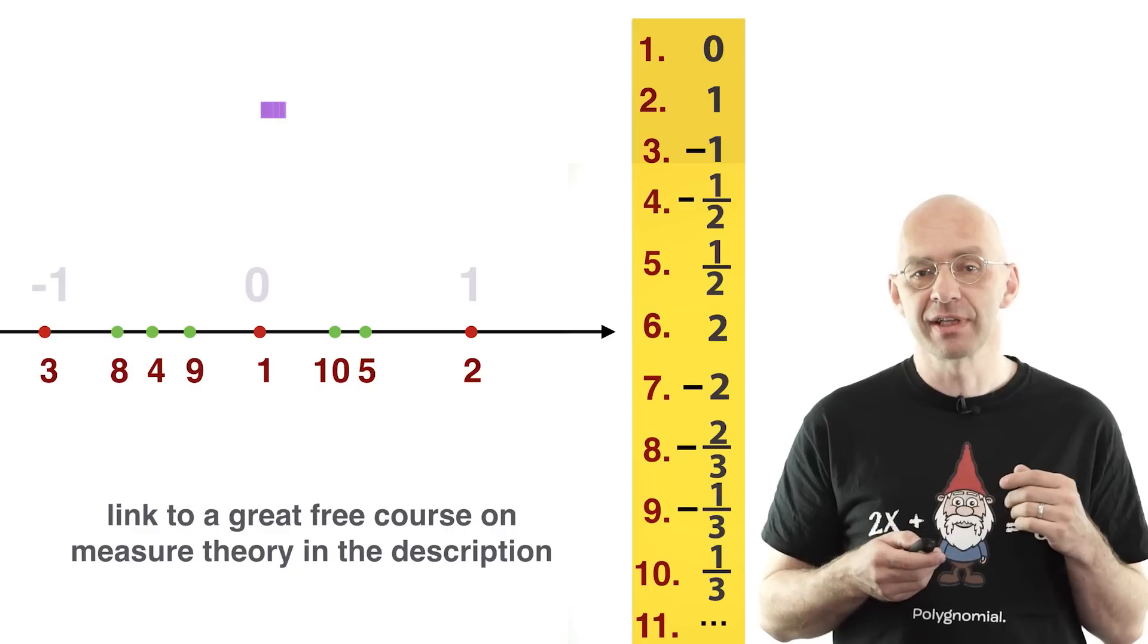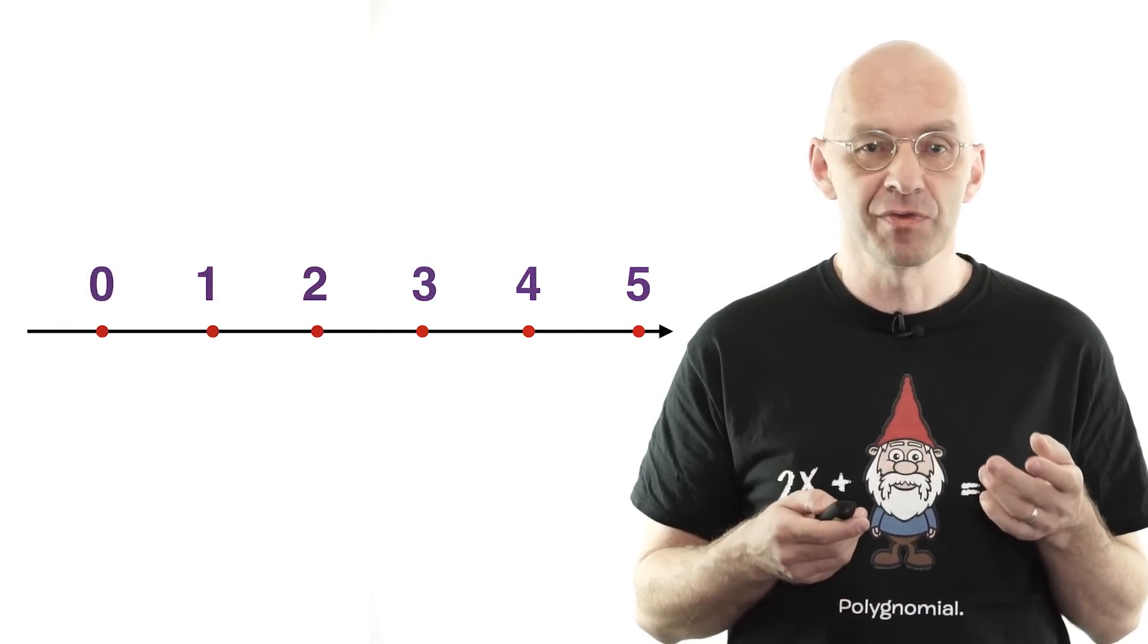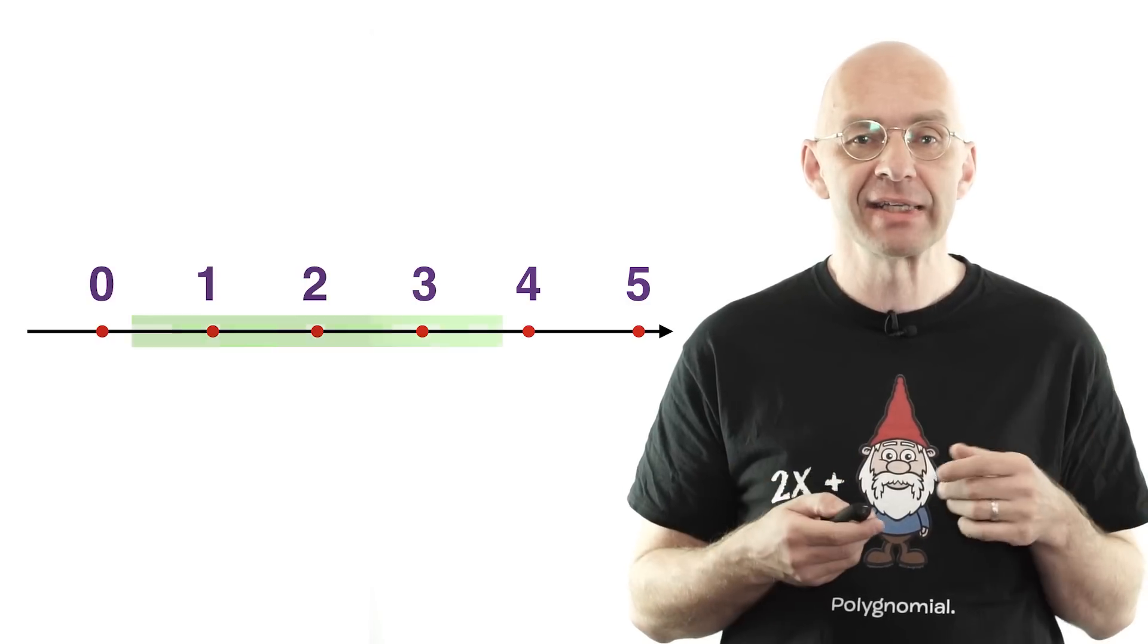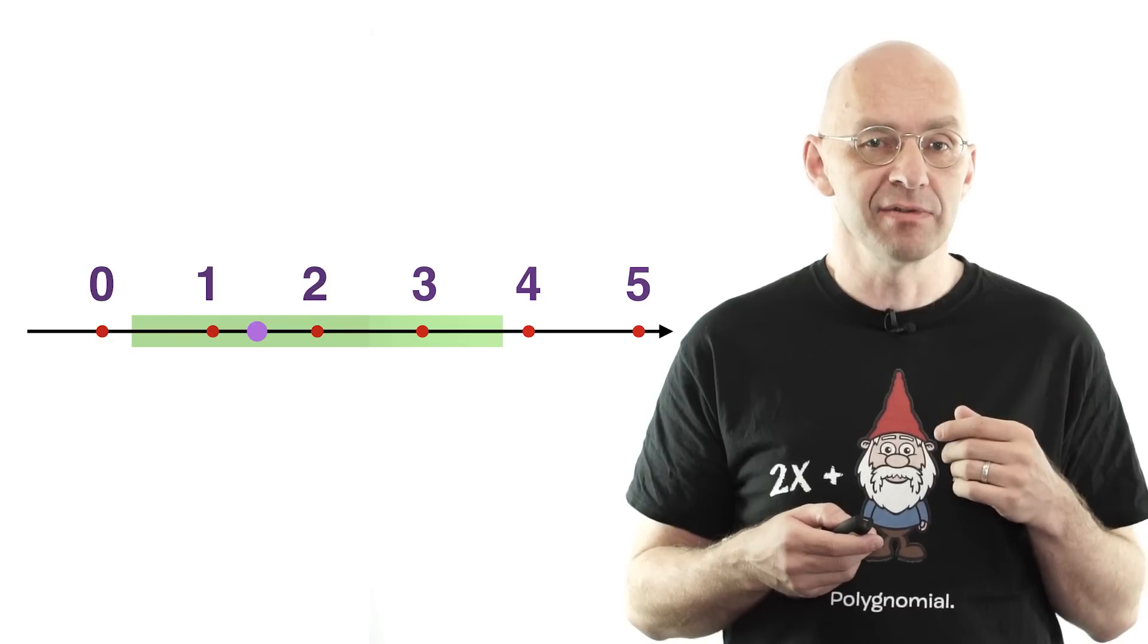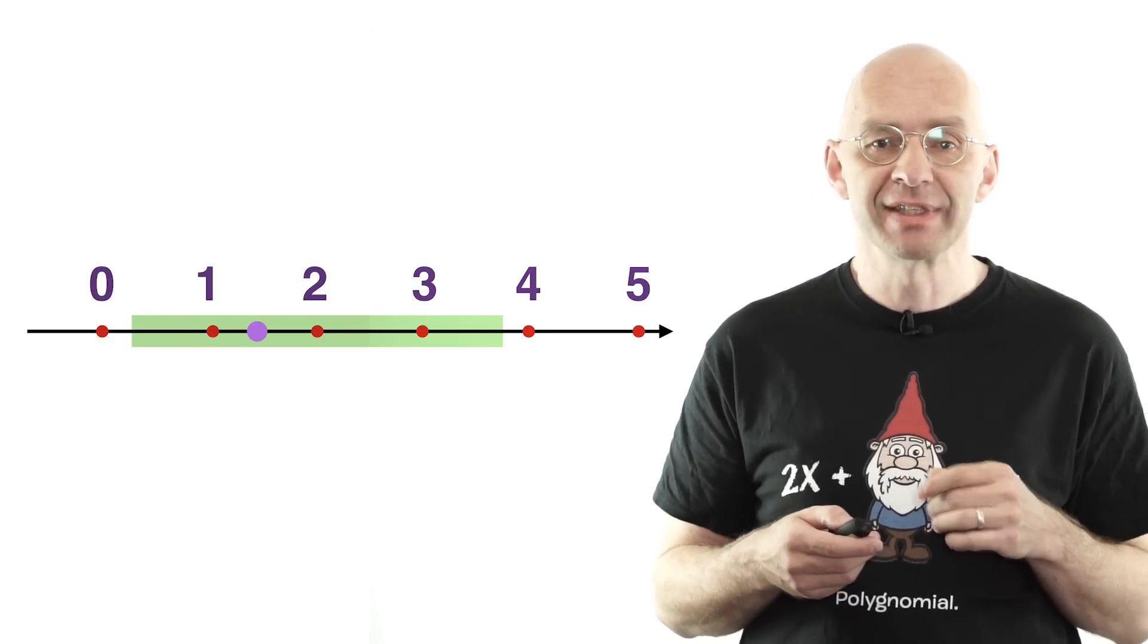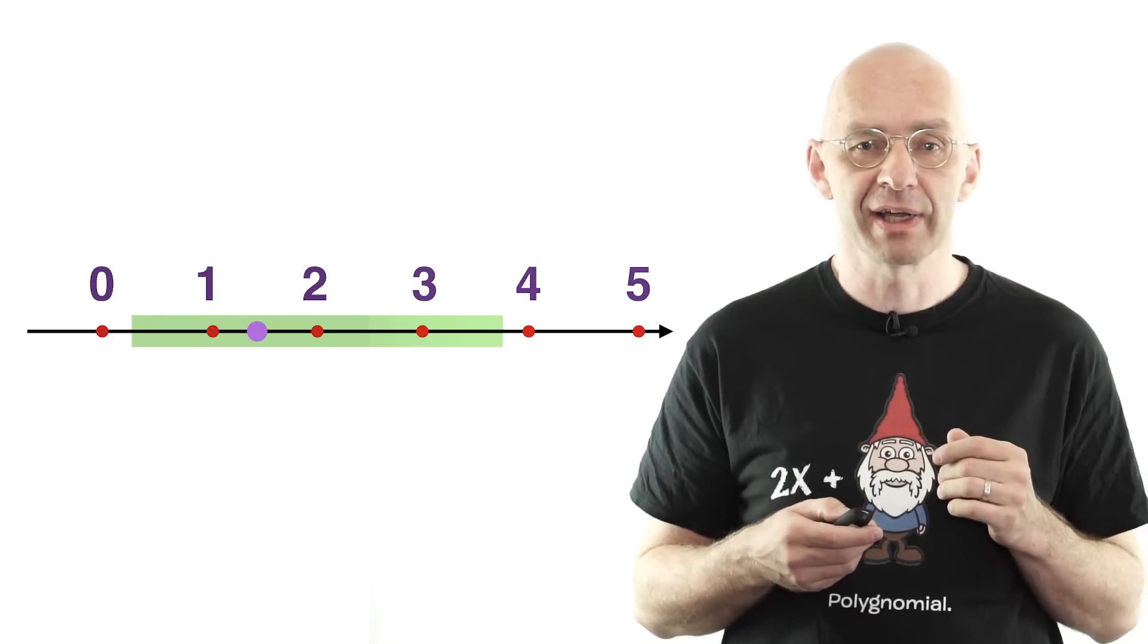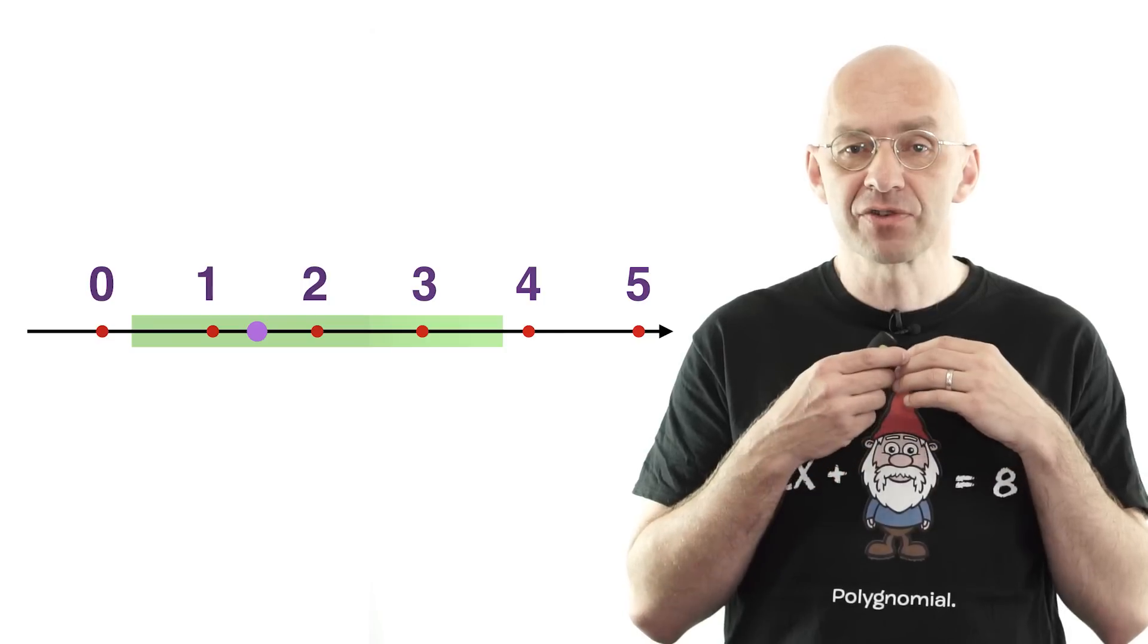What all this also implies is that if we restrict our attention to some finite interval and pick a random number inside this interval, in a paradoxical but very precise sense, you have a zero chance of picking any algebraic number. Or with saying the same, you can be pretty certain to have picked a transcendental number.